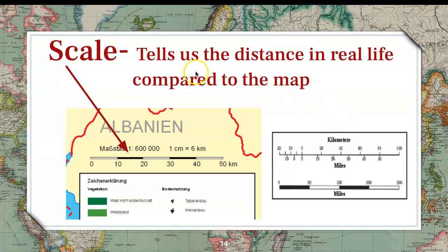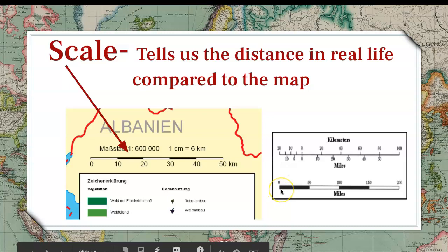Next is scale. Scale tells us the distance in real life compared to the map, because a map is never as big as the actual place. If you wanted to look at a map of Las Vegas, you wouldn't look at a map as big as the city. So they put scales on certain maps — on this scale for Albania, one centimeter equals six kilometers in real life. And this distance in miles: from zero to 50, that distance would equal 50 miles on this map. This just tells us how real-world distance is represented on the map.